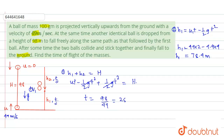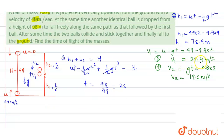Now let us find the velocities of both balls at the moment of collision. For the upward ball: v1 = u - g·t = 49 - 9.8 × 2 = 29.4 m/s (upward). For the ball dropped from above: v2 = g·t = 9.8 × 2 = 19.6 m/s (downward).